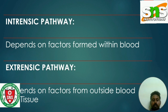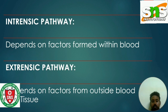The intrinsic pathway gets initiated due to blood trauma. This pathway is also called the slow pathway because it takes several minutes due to the generation of multiple factors. It derives its name from the fact that all the factors involved are present within the blood.